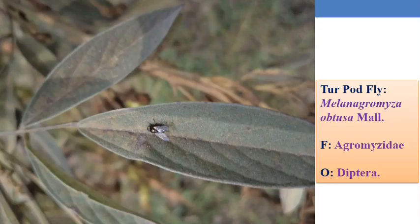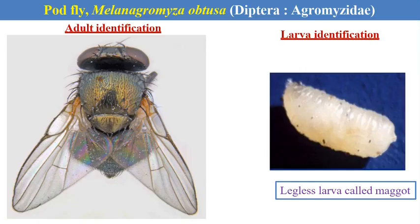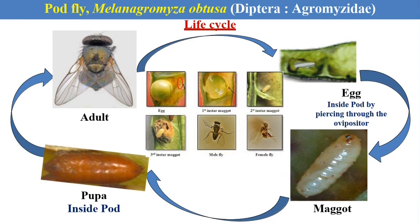The next pest is the tur pod fly. Being a fly, it comes under the order Diptera, and the damaging stage of this dipterous pest is called maggots. The scientific name is Melanagromyza obtusa. The larva is also called maggots — legless larvae. After male-female mating, the female fly lays eggs inside the pod by piercing through the ovipositor. After hatching, the maggots emerge and feed on the developing grains of the tur pod. Pupation also occurs inside the pod.